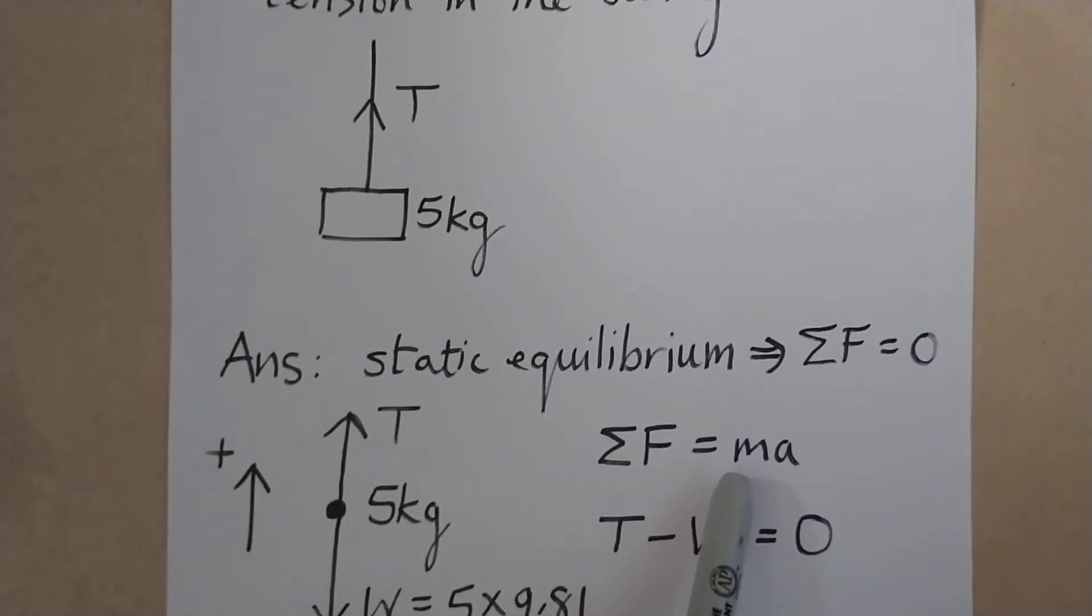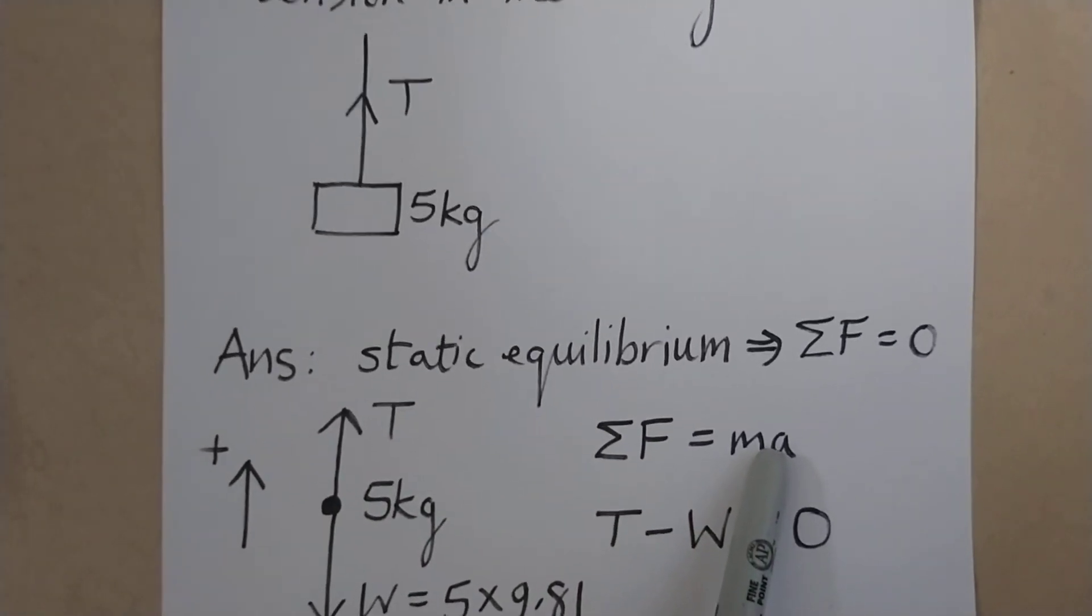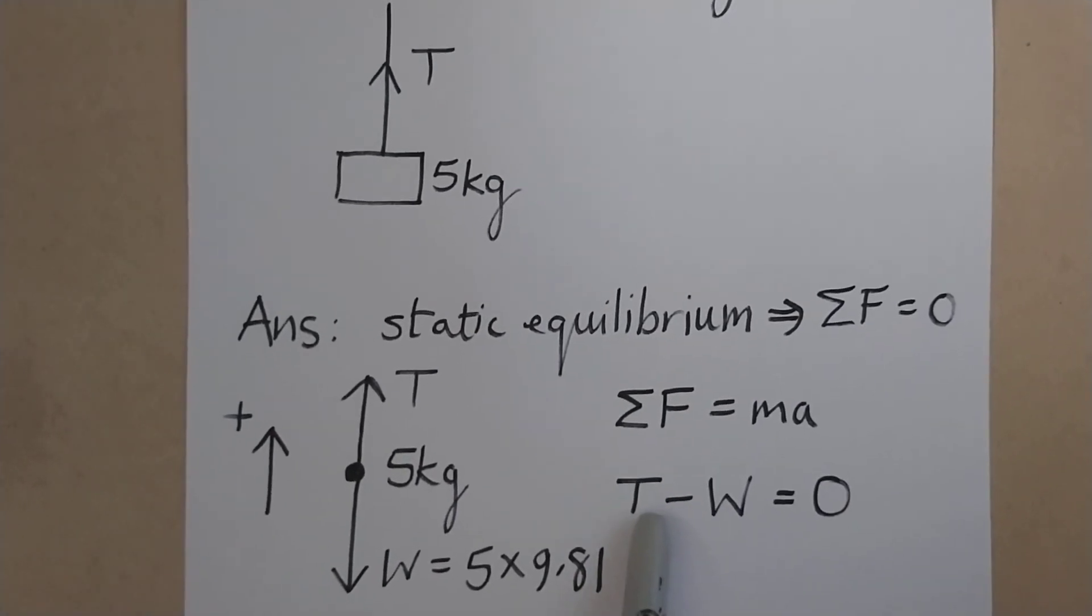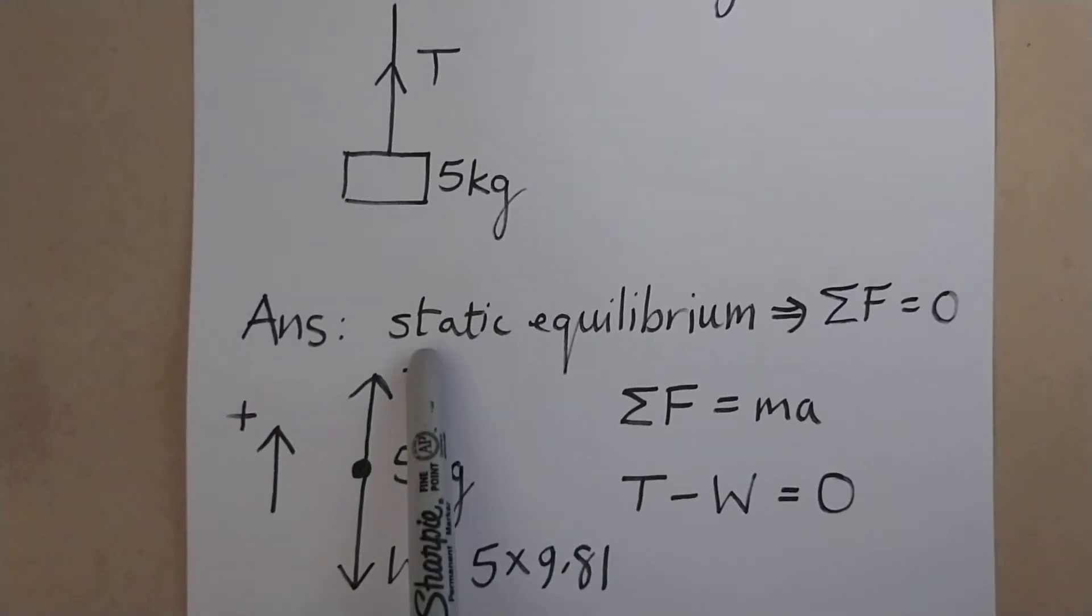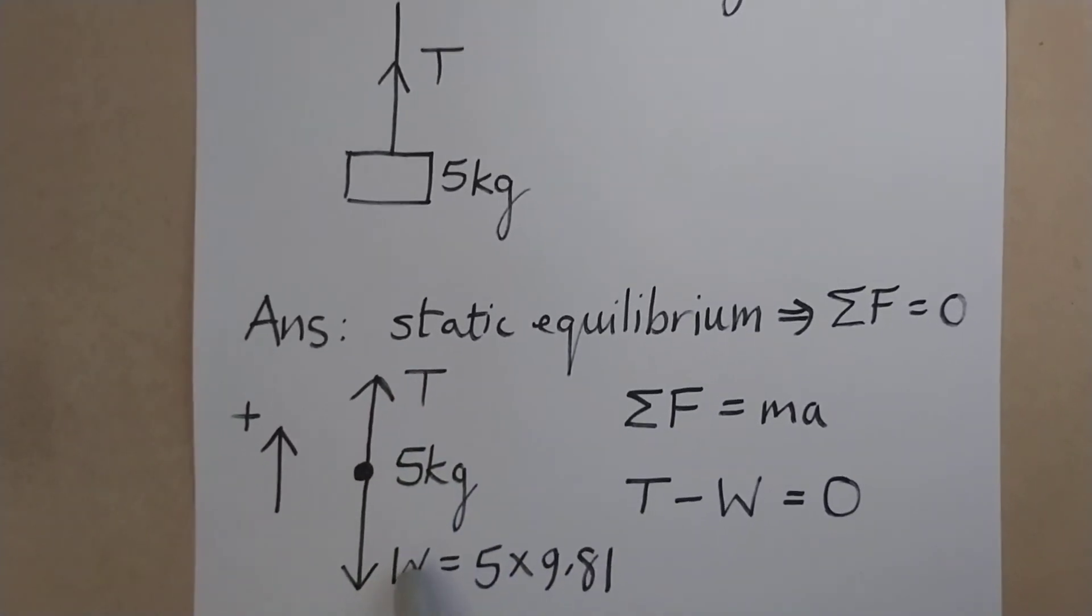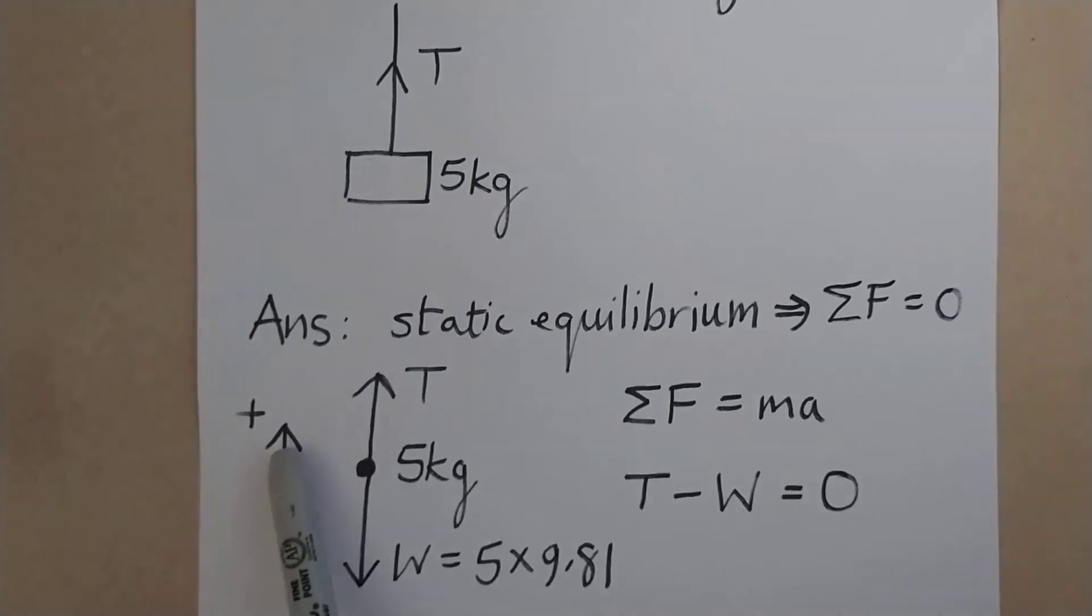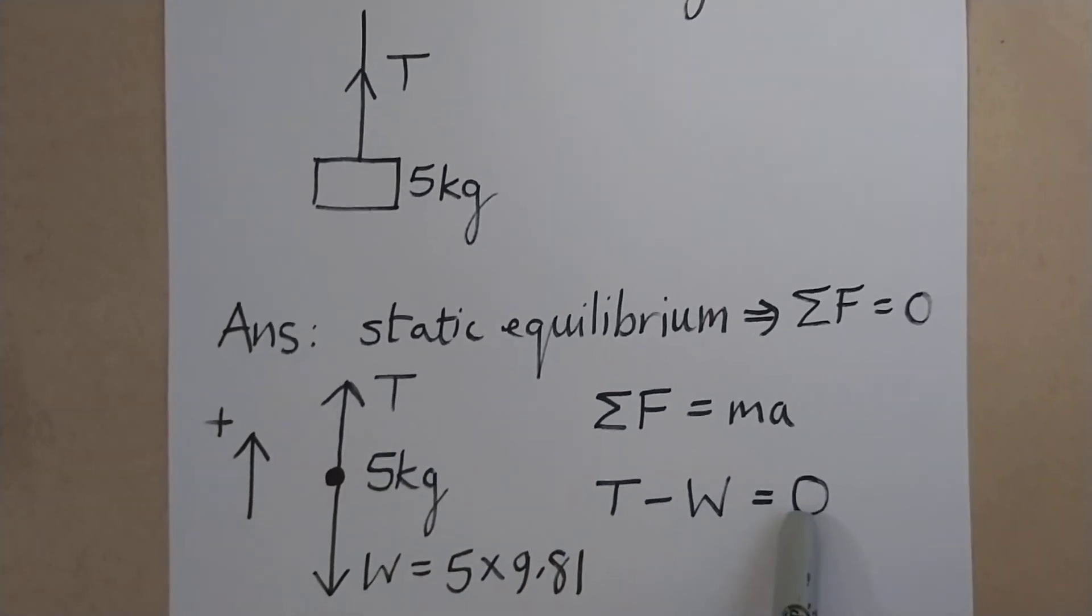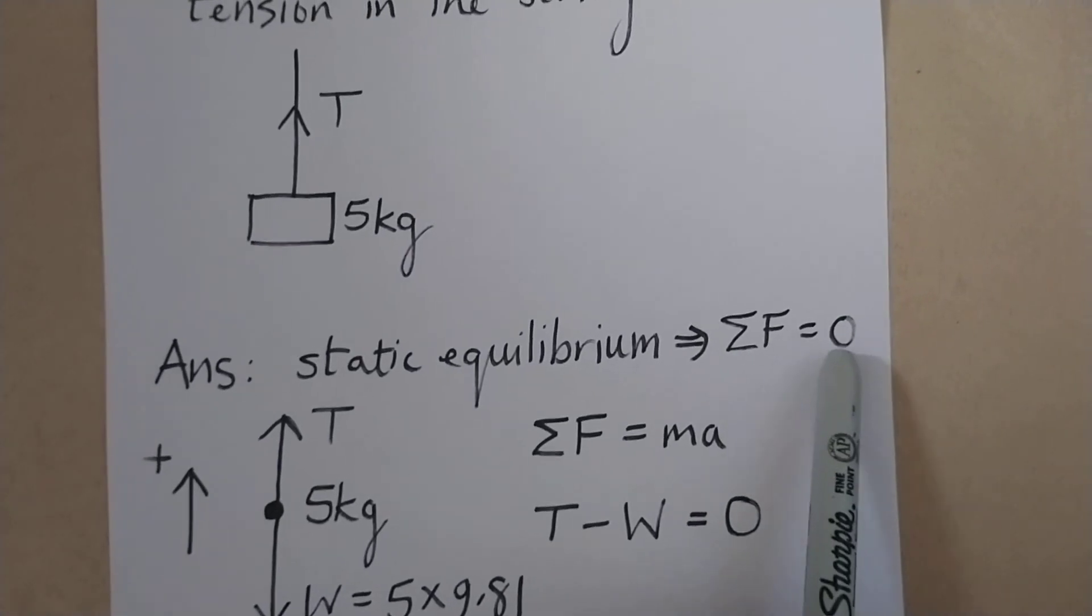We add up our individual forces, but it's the vector sum. So T is pointing in the positive direction, so that's T. W is pointing downwards, that's the opposite direction to this arrow, so it's T minus W, and that must equal zero because as we said earlier, this is equal to zero.